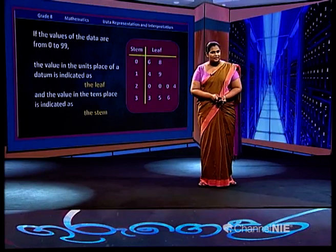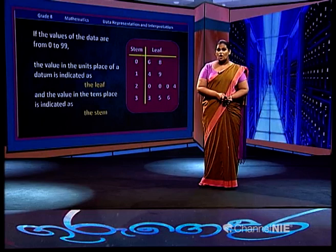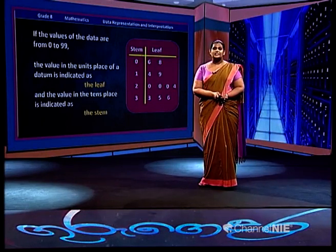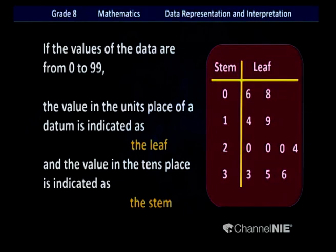Now you know how to represent data on a stem and leaf diagram. In this example the set of data consisted of only 2 places — the ones place and the tens place. For data between 0 and 99, the value in the units place of a datum is indicated as the leaf, and the value in the tens place is indicated as the stem.